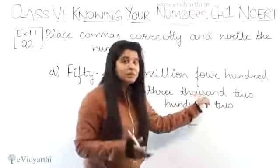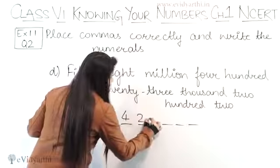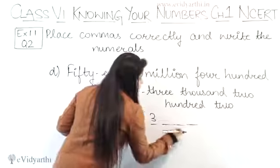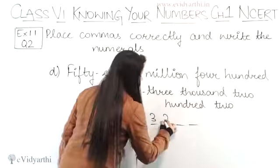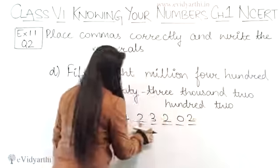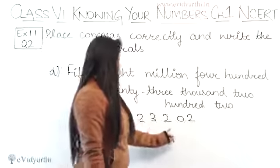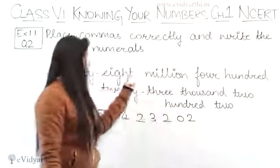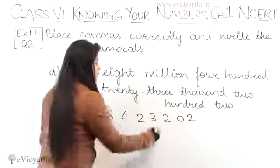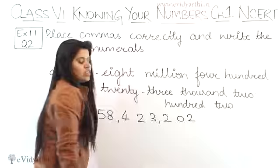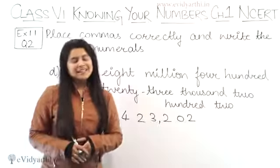So this will be written as 423,000, meaning 3 digits. Okay. 202. So 202. Now let's write the lines here. The number we have is 58, 423, 202. Since million came, we have to do this in international way. So here how will commas be placed? 3 first, then 3 first. Okay. So this was the D part.